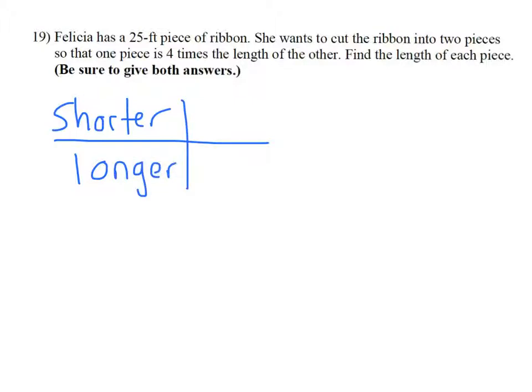One of these pieces we'll call simply x. We need to read through the problem to determine whether the shorter or the longer is x. It tells us that she wants to cut the ribbon into two pieces so that one piece is four times the length of the other. Well, the one that's four times the length of the other is going to be longer, so my shorter one is simply x.